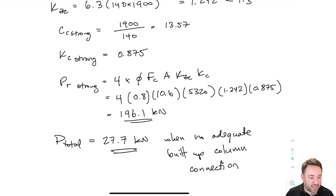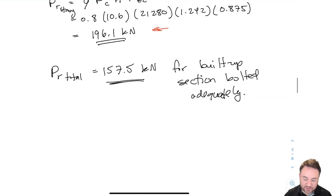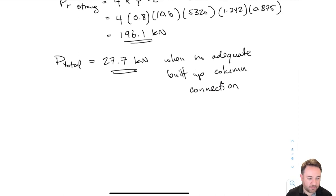The difference is dramatic: with adequate bolting as a built-up column, the strength was 157.5 kN; without proper connection, it drops to just 27.7 kN. The built-up column connection makes a huge difference. The key takeaway is that strong axis buckling is not affected by whether we consider the column to be built-up or not — only the weak axis buckling changes.